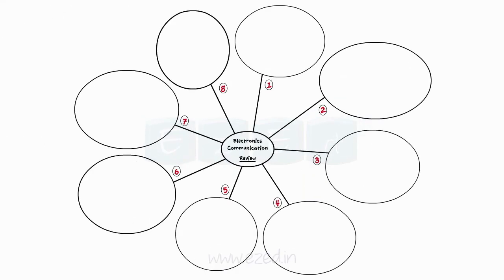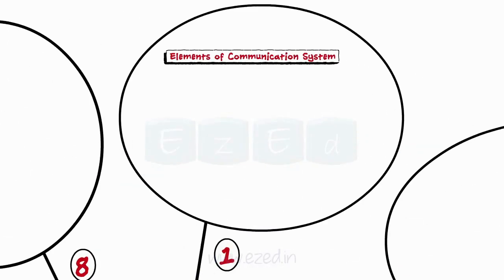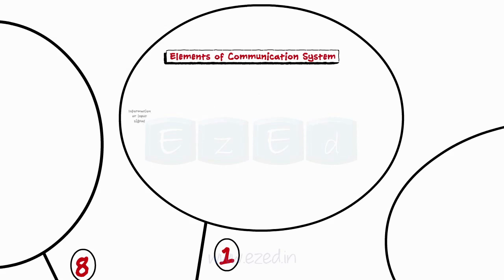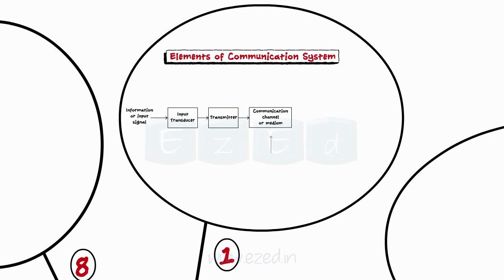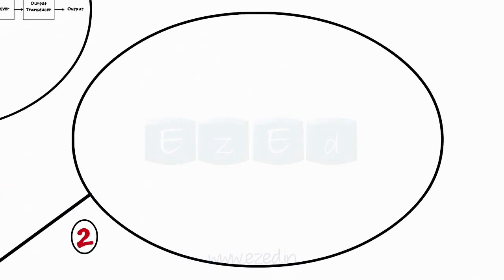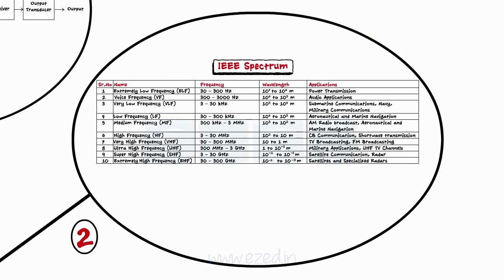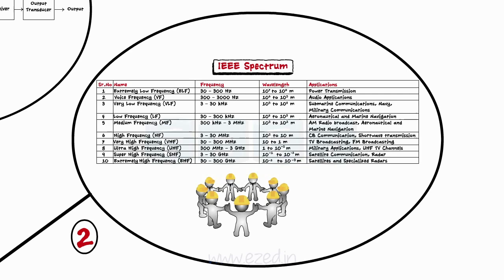Let's take a quick review of what we have learnt. Communication is the process of exchanging information; it always takes place from a source to a destination. Different elements of a communication system are input signal, input transducer, transmitter, communication channel or medium, noise, receiver, output transducer, and the output. We also learnt about IEEE spectrum — the entire range of frequencies of EM waves is called the electromagnetic spectrum or EM spectrum. These frequencies were decided by the Institute of Electrical and Electronics Engineers, known as IEEE.